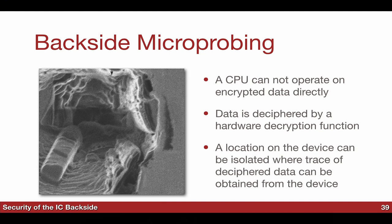Man sieht diese Blase und der Stab, der da rauskommt — das ist ziemlich dreckig, das Dreckeste, was ich je gesehen habe. Wir haben es nicht perfekt hingekriegt: das erste Mal haben wir einen Kurzschluss zwischen zwei Kabeln gemacht. Das Schöne mit FIB ist, dass man mit einem anderen Gas diese Kabel wieder trennen kann, und mit einem anderen Gas wieder zusammenstecken.